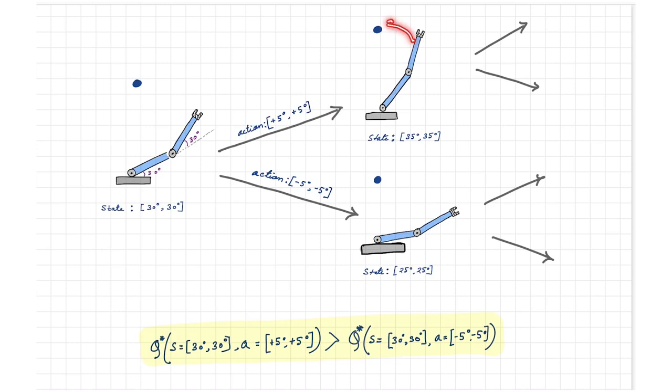Because it will take the arm a bit closer to the target and give higher rewards in the long term if it decides the future actions also rationally. In terms of Q values, we can say that positive 5 action has higher value compared to negative 5 actions at the current state of 30 degrees, 30 degrees of the arm.